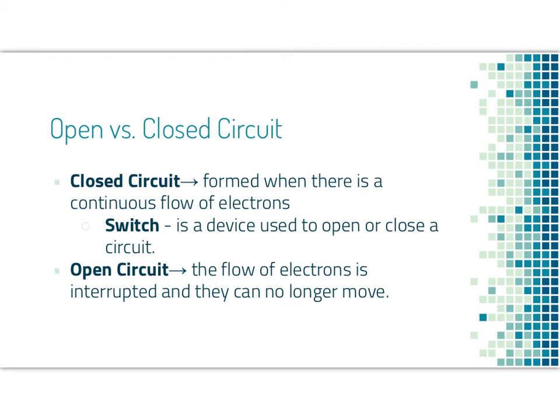There's two different types of circuits. There's a closed circuit and an open circuit. A closed circuit is formed when there is a continuous flow of electrons. We need to use a switch to do this. A closed circuit means if we have a switch, we have that switch closed, and then the electrons are free to flow throughout our circuit. If we open that switch, and we still have these wires, the circuit is no longer a full loop. It is broken. So we consider this an open circuit. The flow of electrons is interrupted, and they no longer move.